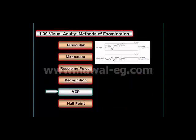The visual evoked potential test merely determines whether the visual stimuli are being received at the visual cortex or not. This test is usually done to rule in or rule out cortical visual impairment.